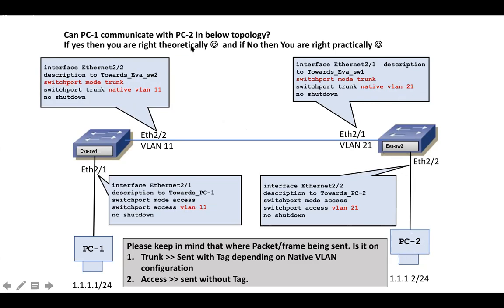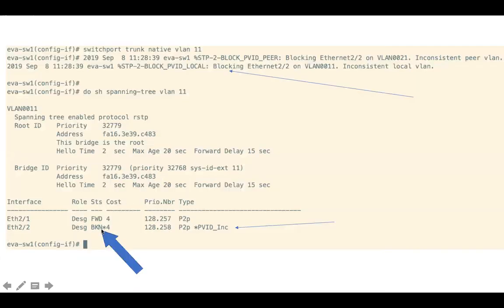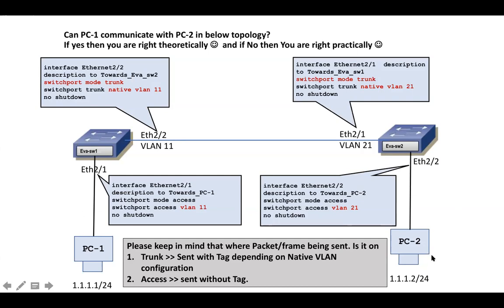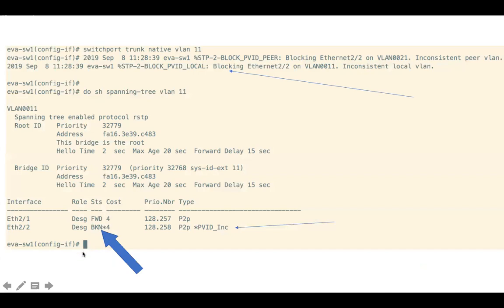So can PC1 communicate with PC2? Theoretically yes — the packet appears to go from PC1 to PC2. But practically no. Why? Because STP will come into the picture and that particular port will be in a broken/blocking state, so traffic from PC1 to PC2 will not be reachable practically. Theoretically it seems they will communicate, but practically they will not. You can see the port is in broken state.